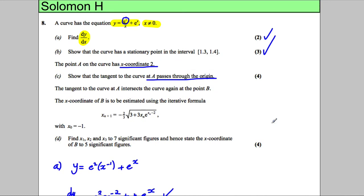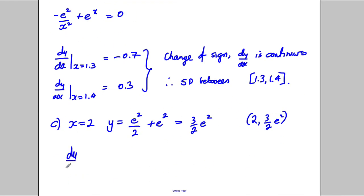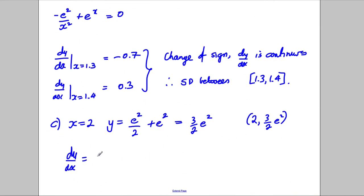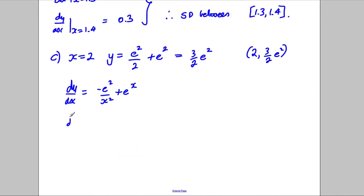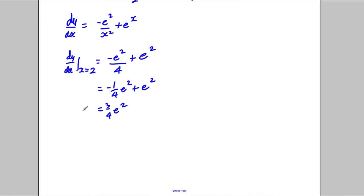We want to find dy/dx, which we've already got: dy/dx equals negative e squared over x squared plus e to the x. At x equals 2, dy/dx equals negative e squared over 4 plus e squared, which is negative one quarter e squared plus e squared, giving us 3 quarters e squared. So that's our gradient.